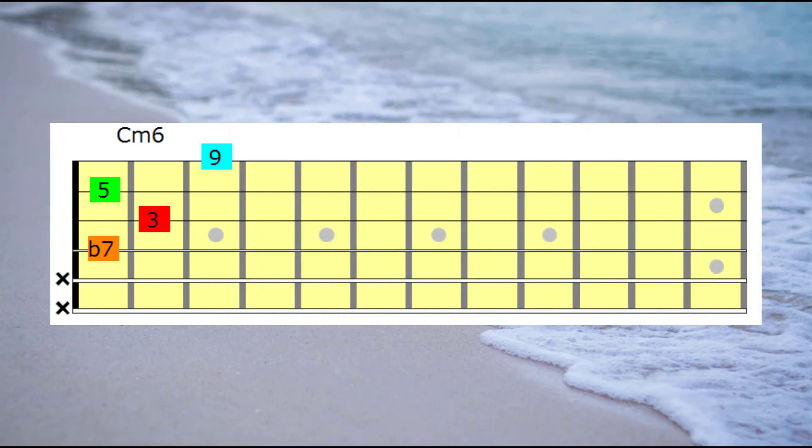Using the C minor 6th chord shape that you see on the screen, we're going to go through each note in the C minor 6th chord and see the relationship of these notes in relation to an F7th. The G note is the 9th of F7, the C is the 5th, the A is the 3rd, the E flat is the flat 7th.